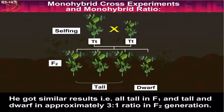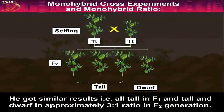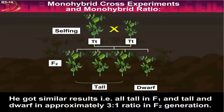He got similar results — that is, all tall in F1, and tall and dwarf in approximately a 3:1 ratio in the F2 generation.